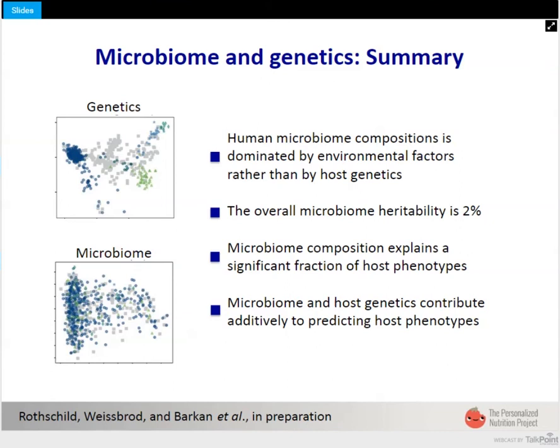Summarizing this part of the talk: microbiome composition is mostly dominated by environmental factors rather than host genetics. Our estimate is that only a few percent of microbiome composition and function is attributable to human genetics, and the rest is environment. When we integrate microbiome, we can explain and find associations with human traits to the same degree as human genetics — and both components contribute independently to different human phenotypes.